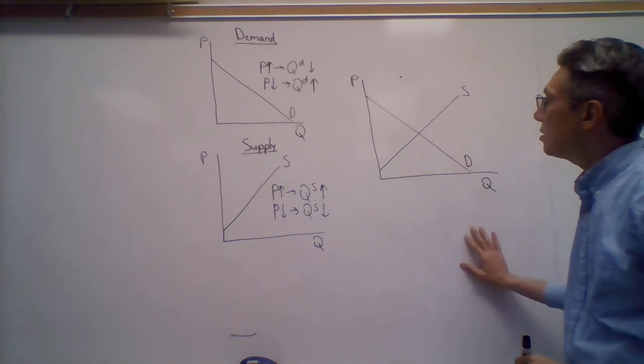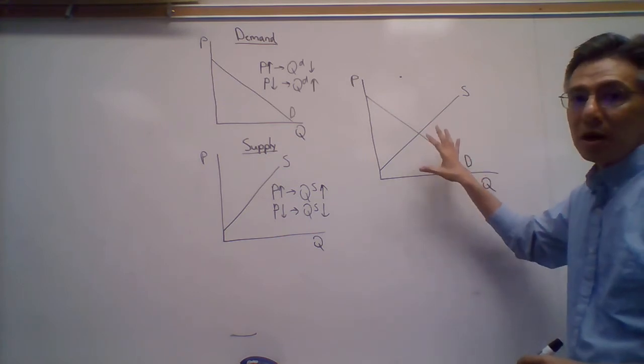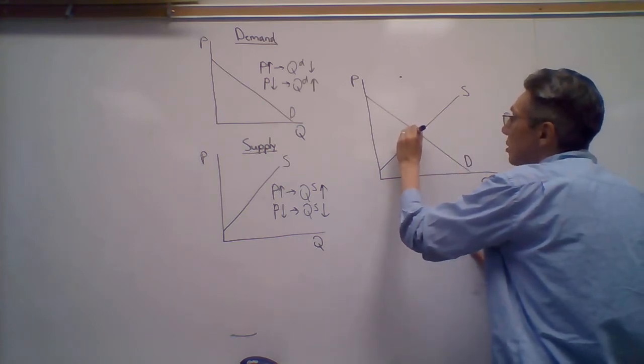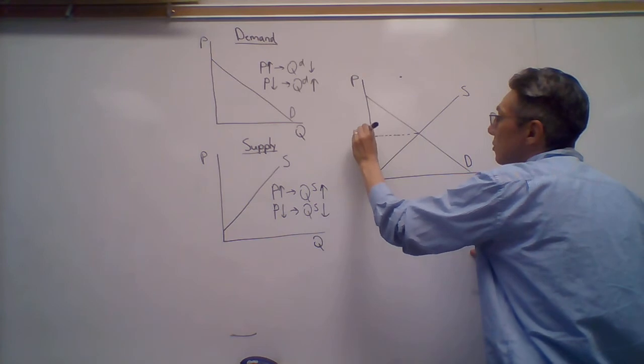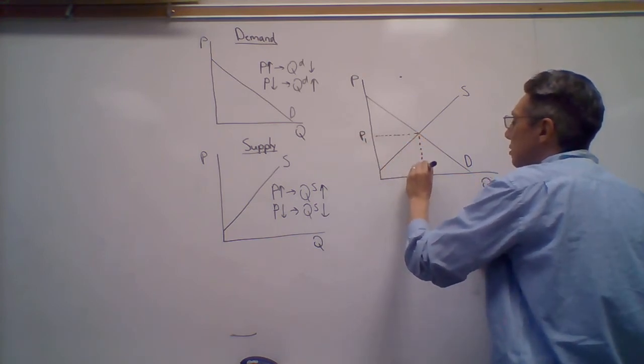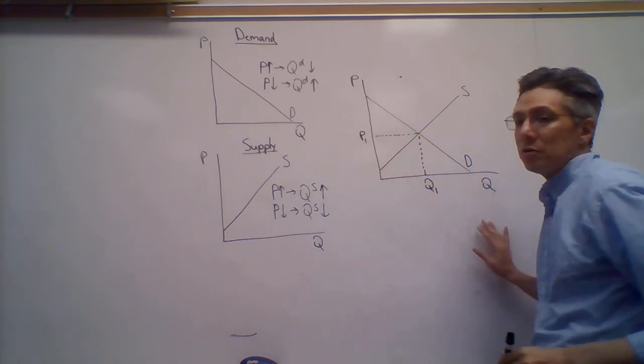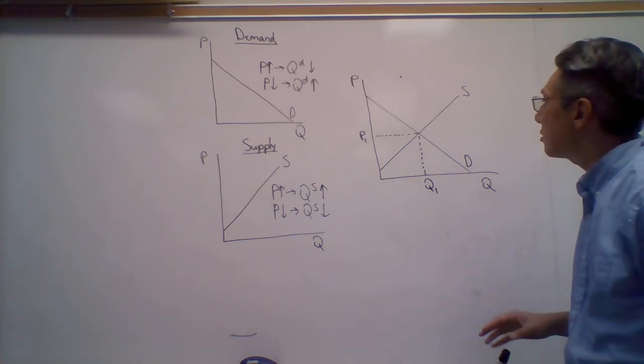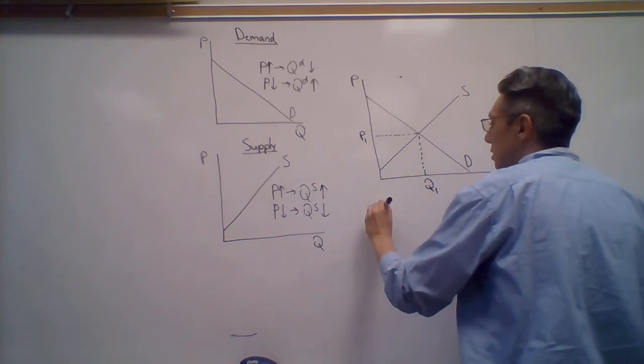Okay, all right. So in terms of where is the equilibrium, or where do these curves cross? The curves cross at this particular point, and we call this P sub one and Q sub one.